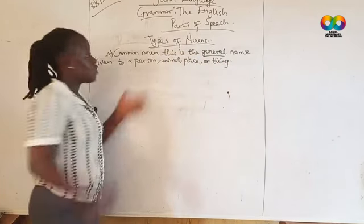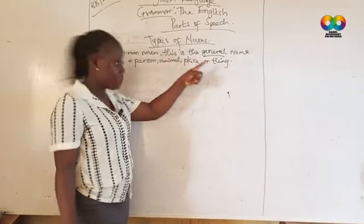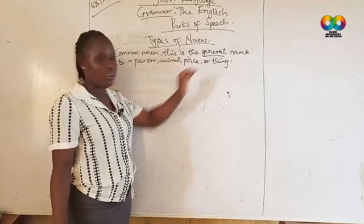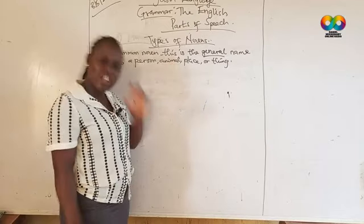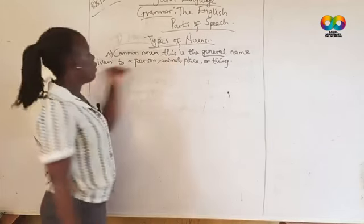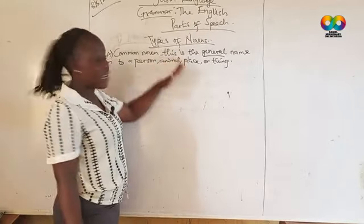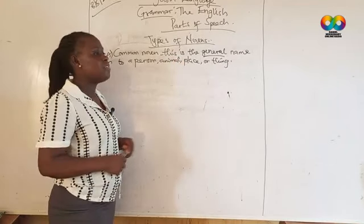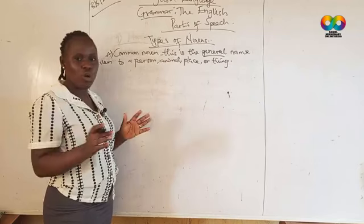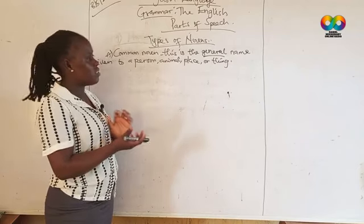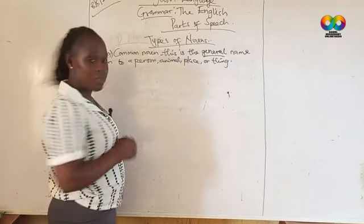The common noun — as underlined here, we underlined the word 'general.' The common noun is the general name given to a person, an animal, a place, or thing. It means anywhere you might go in the whole world, this is the actual name that is called.